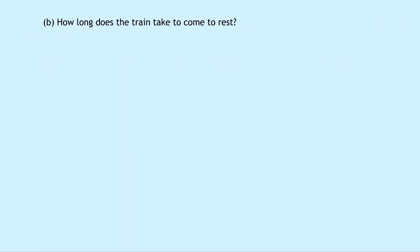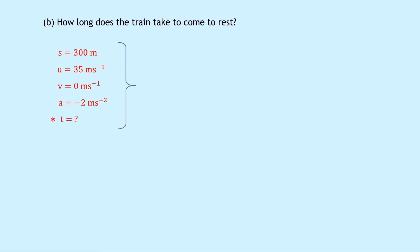Part B says how long does the train take to come to rest? We're looking for time now. Writing down what we know: S equals 300 metres, U equals 35 metres per second, V equals 0 metres per second, and A equals minus 2 metres per second squared. We're trying to find T, so we could use any equation of motion. Using V equals U plus AT and substituting in: 0 equals 35 plus minus 2 times T, so 2T equals 35, giving T equals 17.5 seconds.